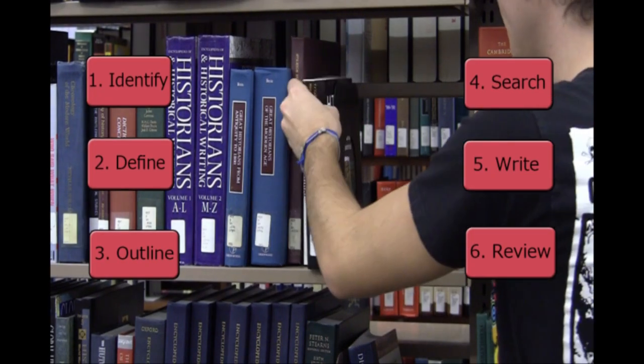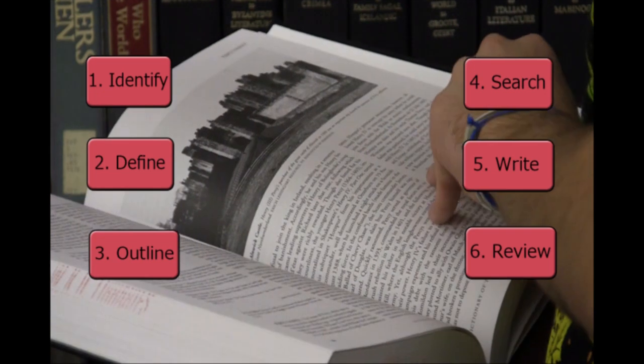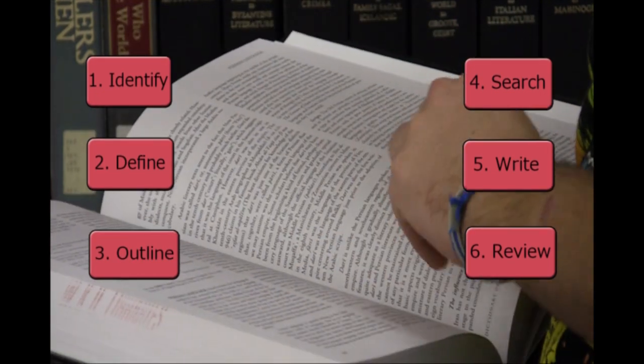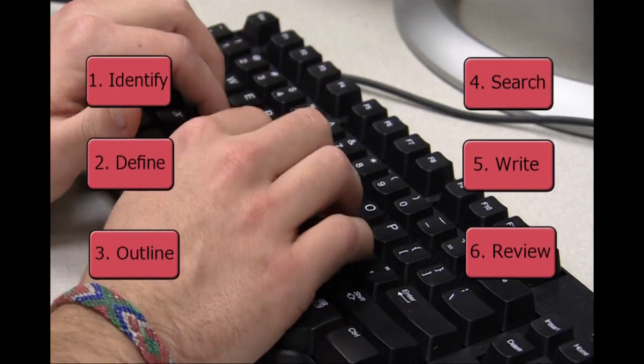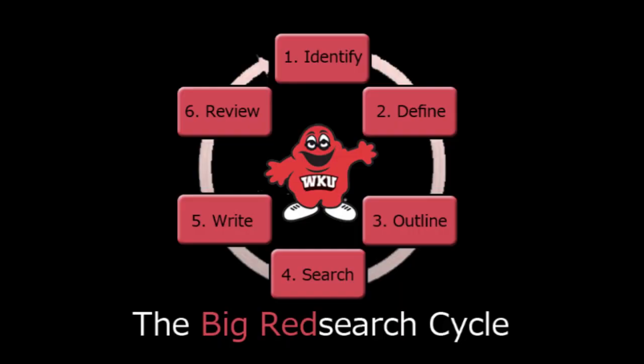Our Big Red Search Cycle is an introduction to the research process. This is the cycle we suggest you follow to search and write for papers, projects, and other assignments.